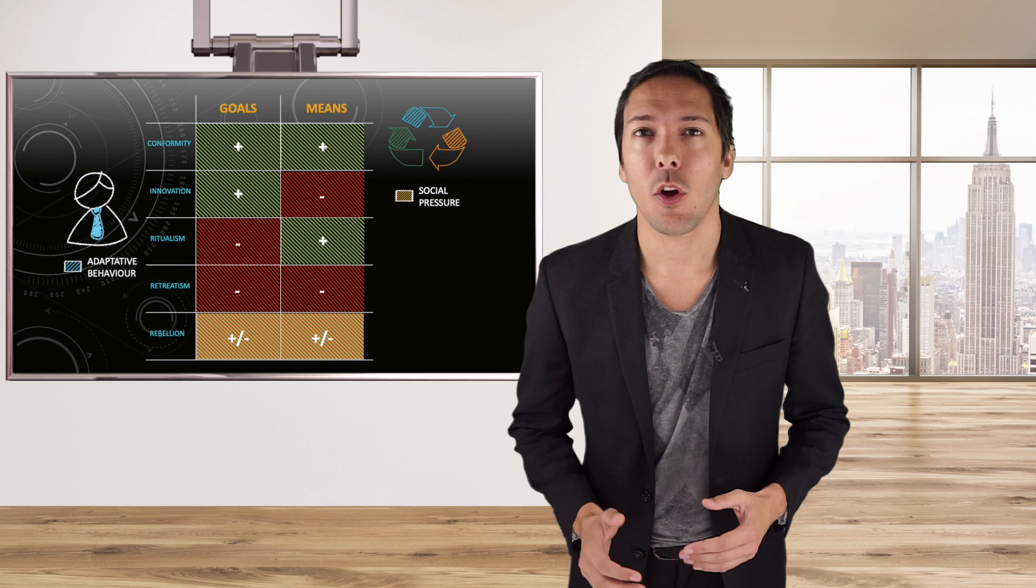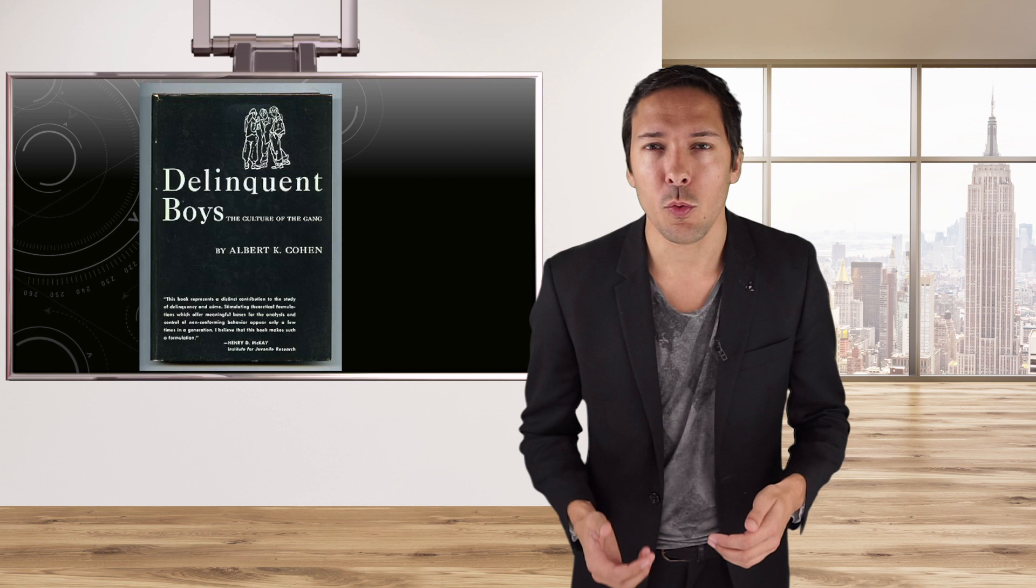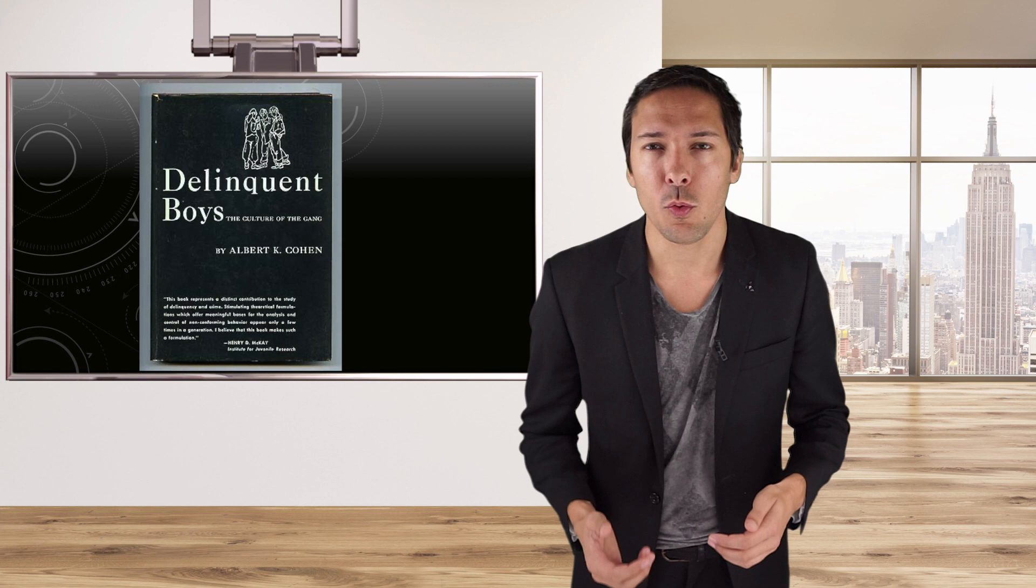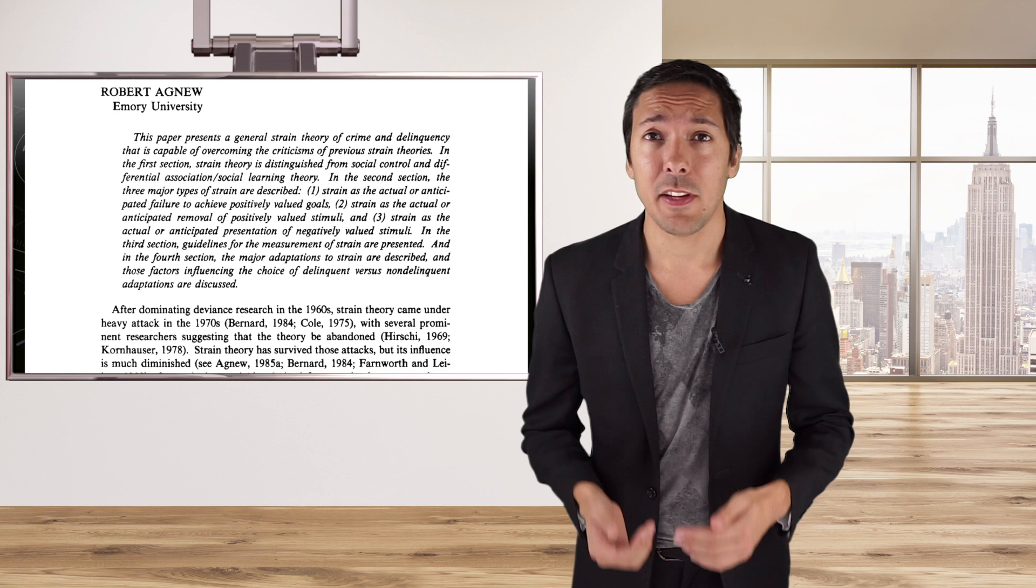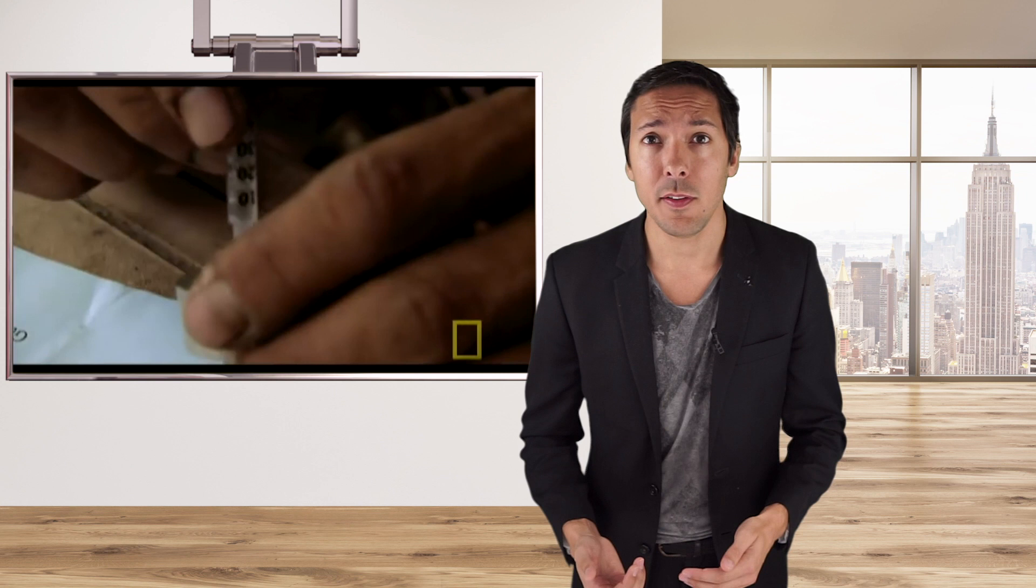And three, the theory was constructively revisited and criticized by many scholars including Albert Cohen in Delinquent Boys and Robert Agnew who tried to propose a general strain theory. The general strain theory includes not only the inability to reach a desired goal but also the presentation of negative stimuli or the loss of positive stimuli. For instance, that explains why a student can assault his bully to end harassment or why people can take illegal drugs to feel better. But this could be the subject of another video.